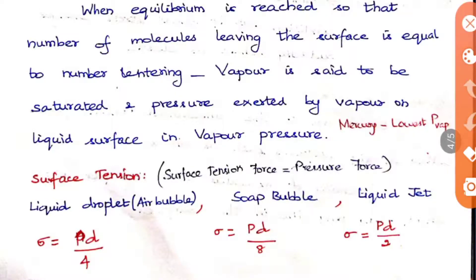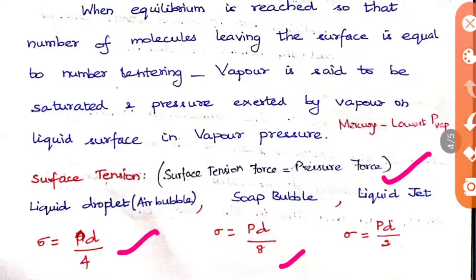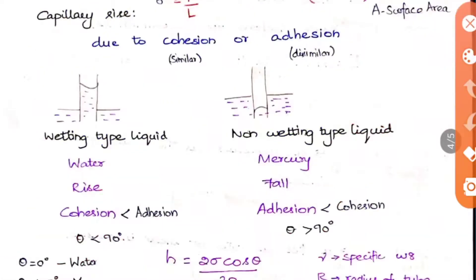When you equate surface tension force and pressure force, for a liquid droplet: sigma = pd/4; for a soap bubble: sigma = pd/8; for a liquid jet: sigma = pd/2. Here d is diameter and p is pressure. In reverse problems, p = 4*sigma/d. These formulas are very important.